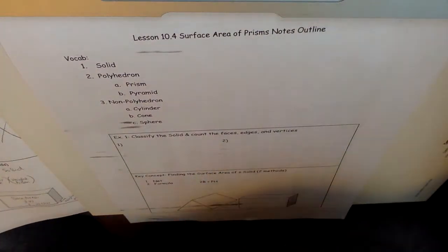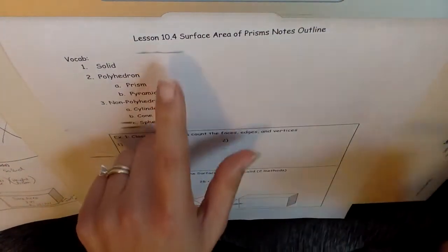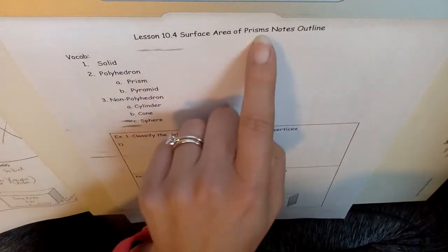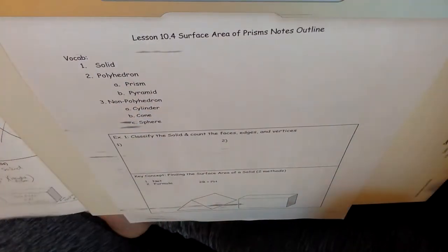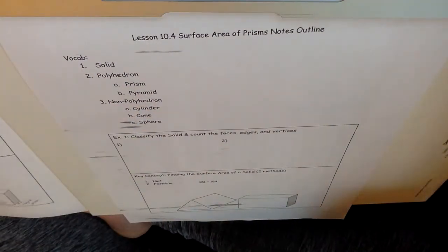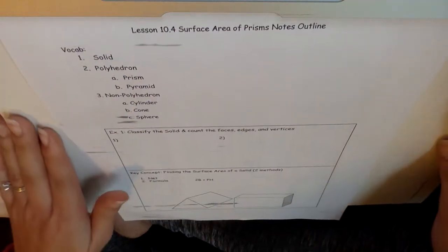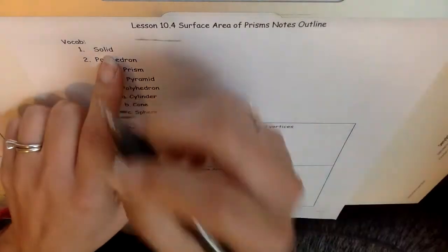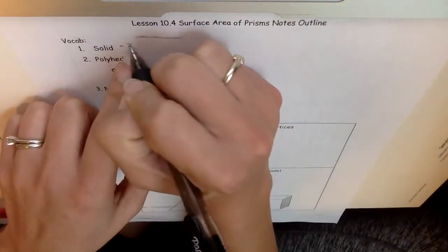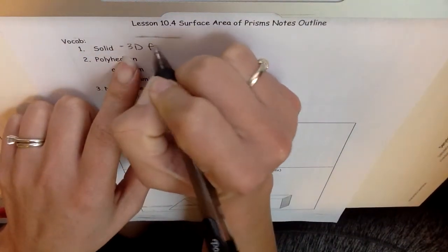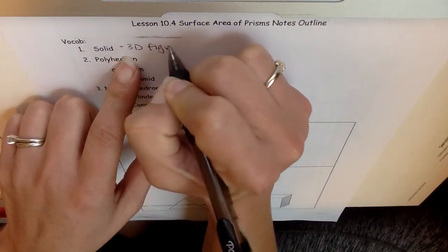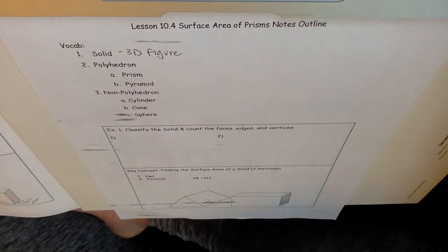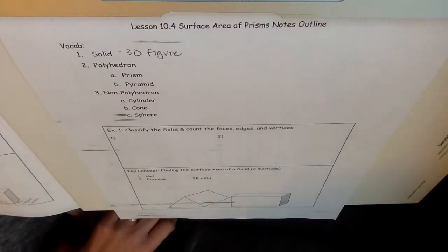Hey y'all, today's lesson is lesson 10 for surface area of prisms, and I've given you a note outline. Let me first go over some vocabulary. A solid is a three-dimensional figure, and we're going to be talking about different solids.